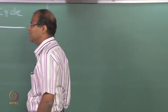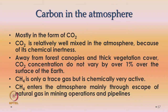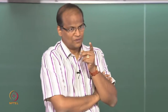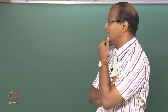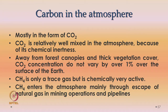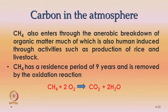CH₄ methane is only a trace gas, but it is chemically very active. Did you know that CH₄ is released when rice is produced? CH₄ enters the atmosphere mainly through the escape of natural gas in mining operations and pipelines. It also enters through the anaerobic breakdown of organic matter, much of which is human-induced through activities such as production of rice and livestock — a lot of CH₄ natural gas is released through cattle as well.